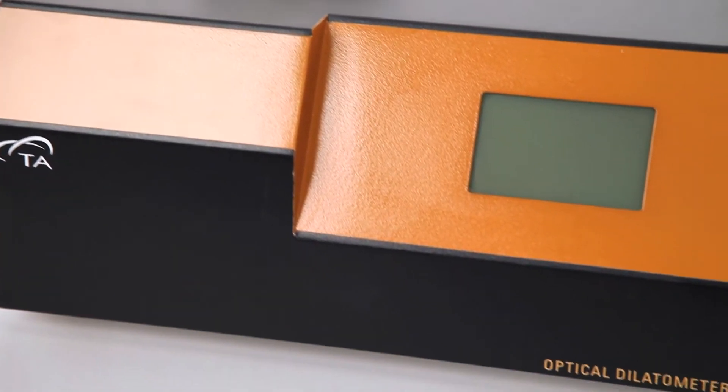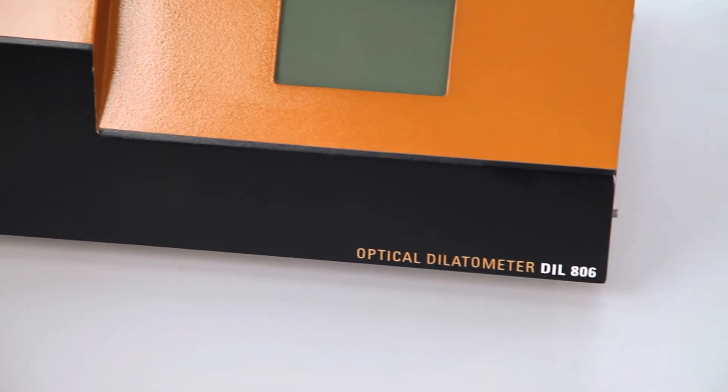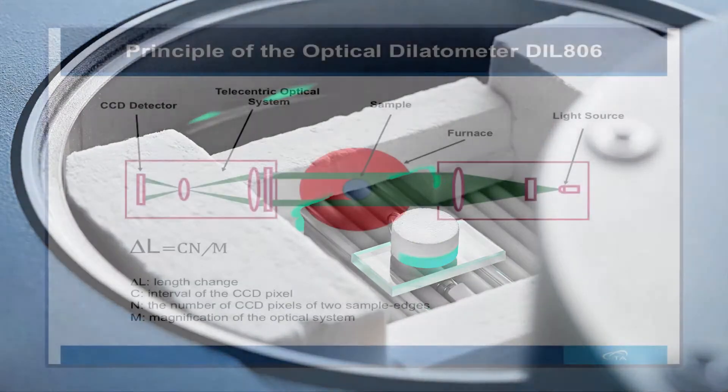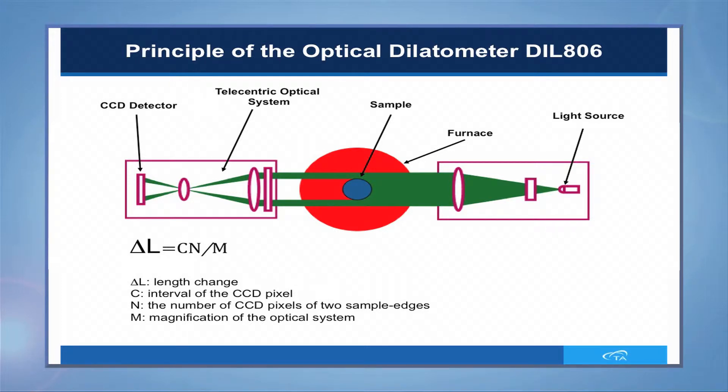The DIL-806 is an optical dilatometer based upon the shadow meter design. A high-intensity LED light is used on the sample and the thermal displacements are detected through the sample's shadow on the CCD sensor.